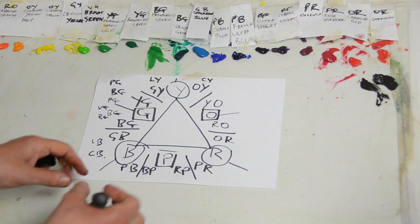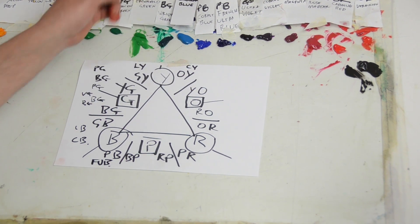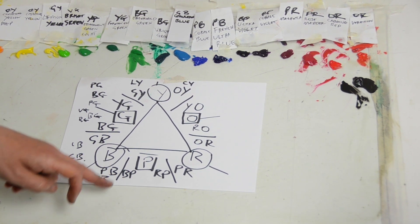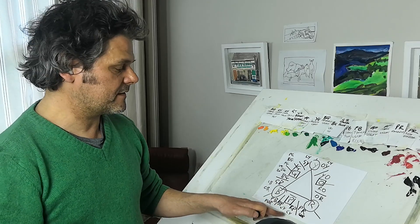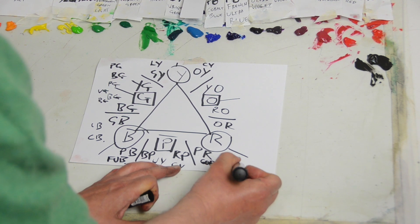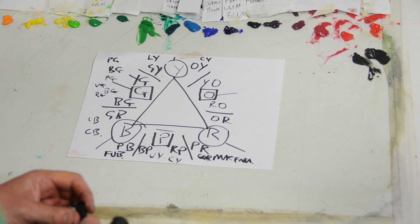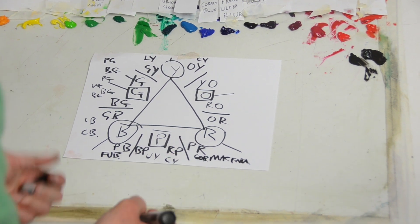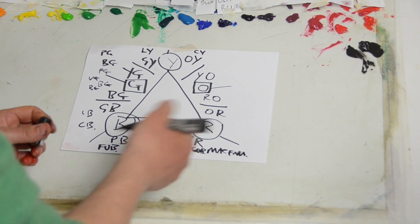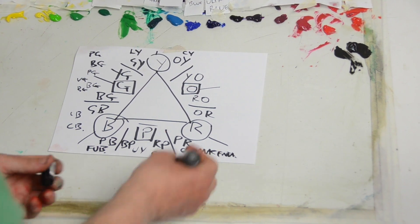Then you get the French ultramarine blue, which has definitely got a purple bias to it, going over to ultramarine violet, going towards blue-purple. The red-purple has cobalt violet. Then we move over to the purple-red — the purple-red is magenta, which is now seen as the primary colour of the pigments, over in the purple-red area. Rose madder is there. The alizarin crimson is there as well, but I think the alizarin crimson is a bit of a shade and it's not quite as cool as the rose madder. Rose madder is perhaps the most pure red we've got on the purple side.